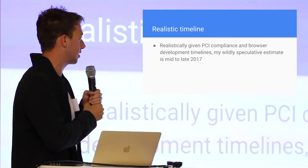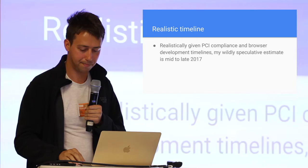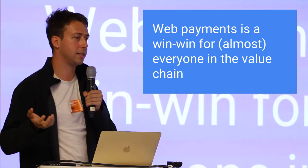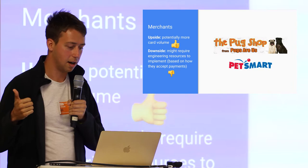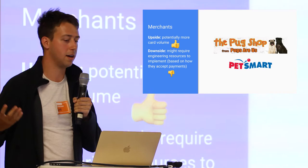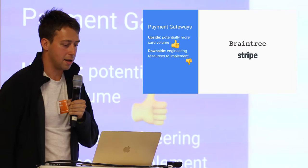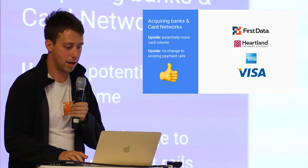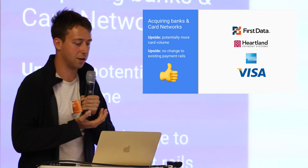A realistic timeline for seeing this in production is probably around mid to late 2017, given all the browser timelines. As for who benefits in the value chain: merchants get potentially more card volume, though it requires engineering resources to implement and edit your checkout flow. Payment gateways also get more card volume but will probably have to do the most legwork. Acquiring banks and card networks have essentially no downsides — the rails don't change at all and they can only benefit.